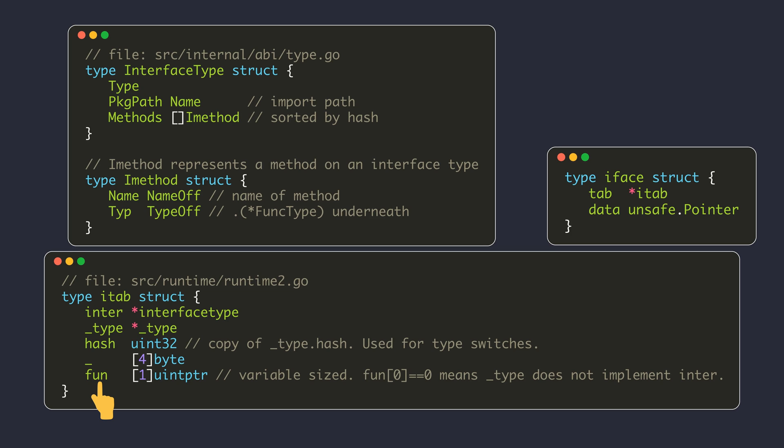The last field in the interface table is a list of function pointers used to store pointers to the corresponding methods of the non-interface type. In the struct definition it's defined as an array of size 1, but in the source code it is treated as a variable-sized array using unsafe pointer conversions and pointer arithmetic. Note that the interface type struct is for representing type information, while the two-pointer structure is for representing the runtime value of an interface.